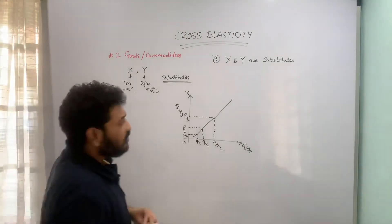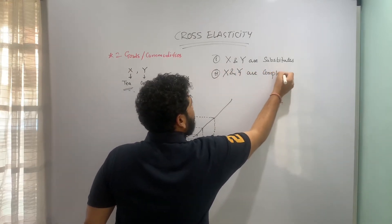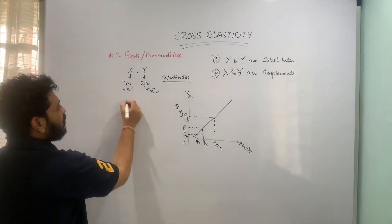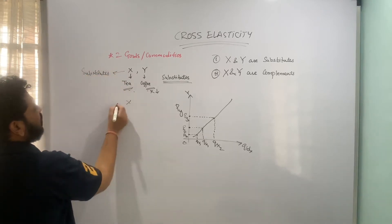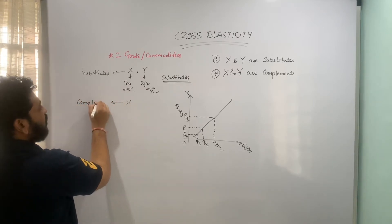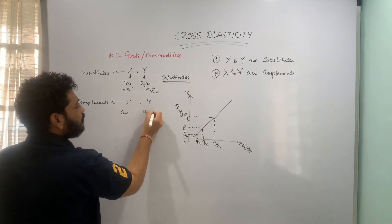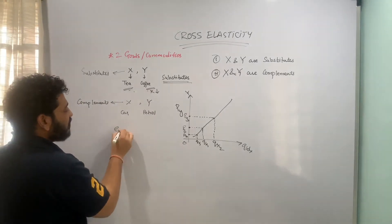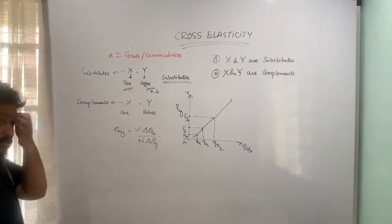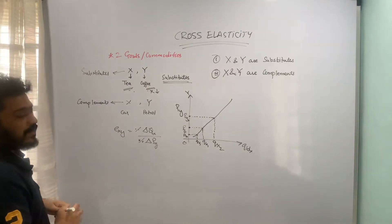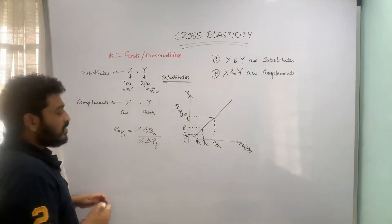Let us take the case wherein two goods are complements of each other. This time, let x be a car and y be petrol. Employing our usual formula, Exy is equal to percentage change in quantity demanded of good x due to percentage change in price of y. A similar formula applies here, but just look at the relation between the two — for substitutes it was a positive relation, but here you would not see a similar positive relation.